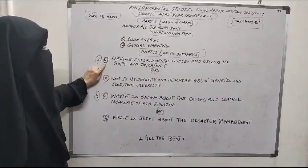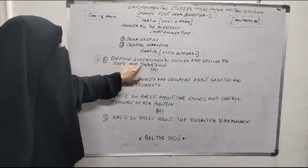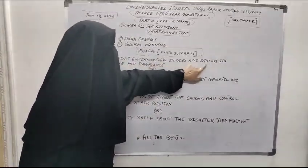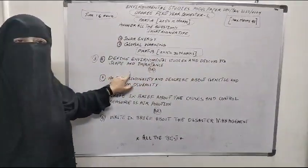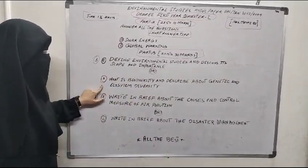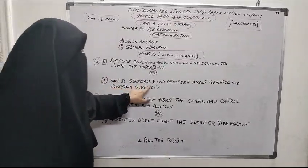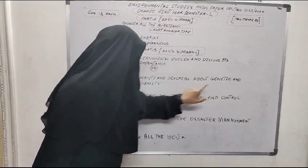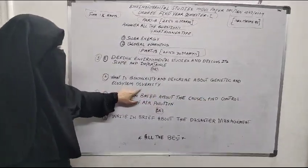Third question. Third A: Define environmental studies and discuss its scope and importance. Third B: What is biodiversity and describe about genetic and ecosystem diversity.